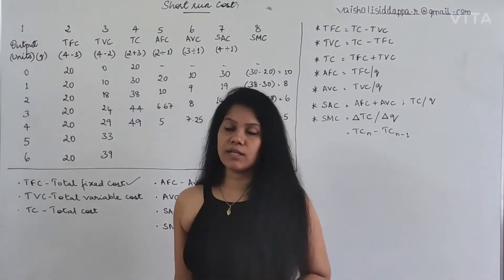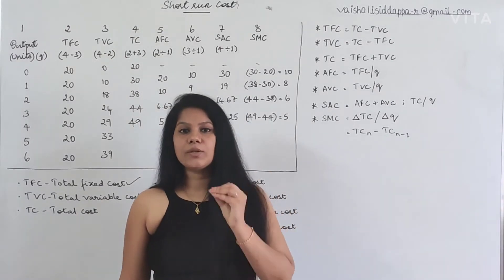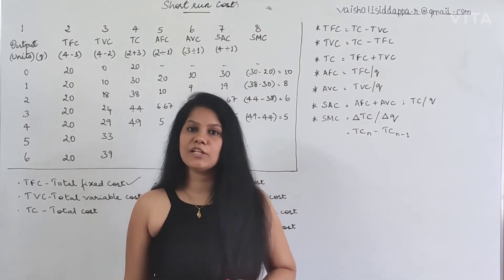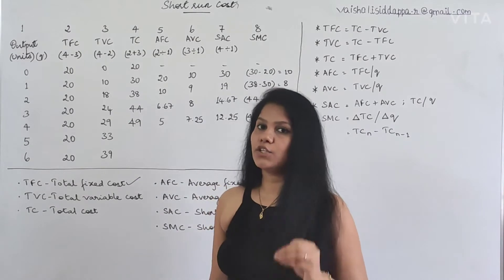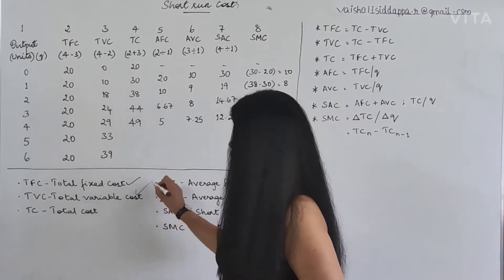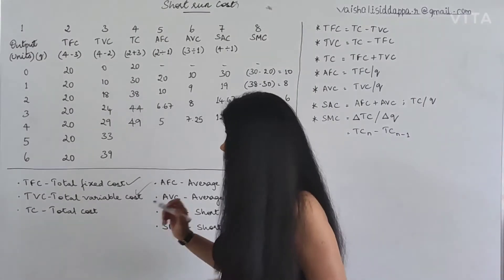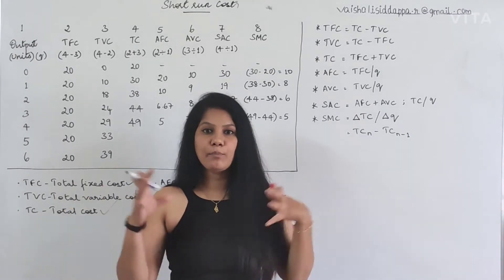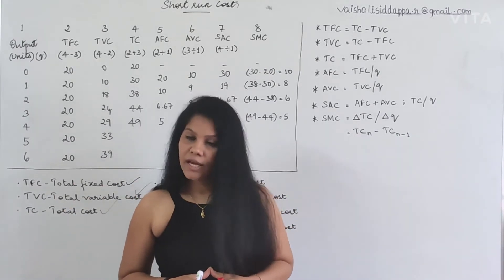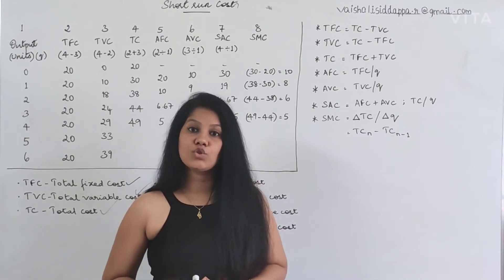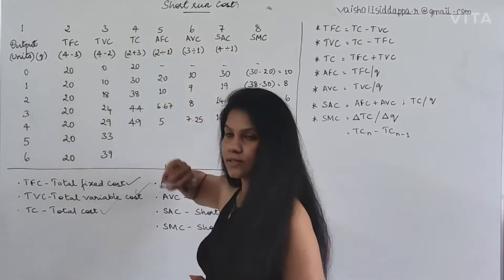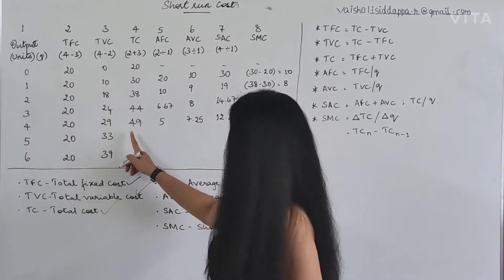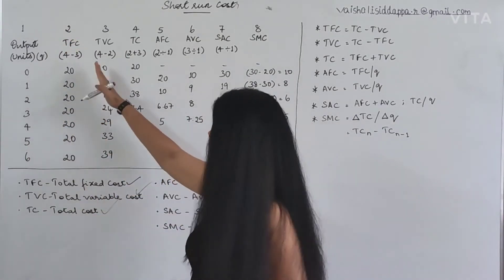The next concept is TVC - Total Variable Cost. For the variable factors, the total cost for what we are spending will be called Total Variable Cost. The third one is Total Cost. When it comes to Total Cost, we have to add both - Fixed Cost and the Variable Cost. If you add both, only then it will be a Total Cost.